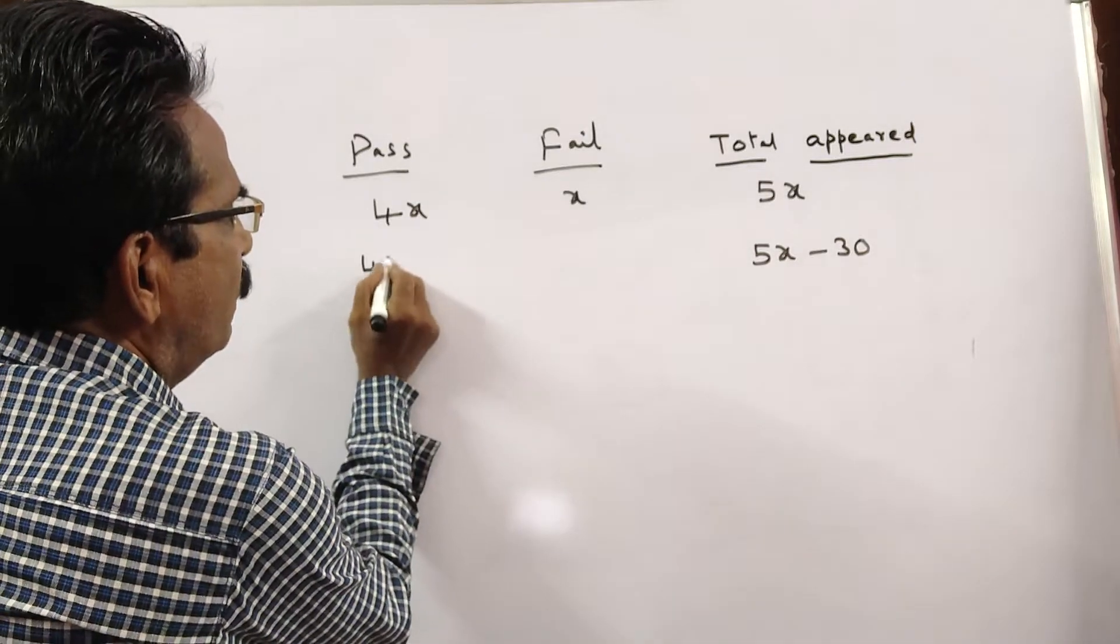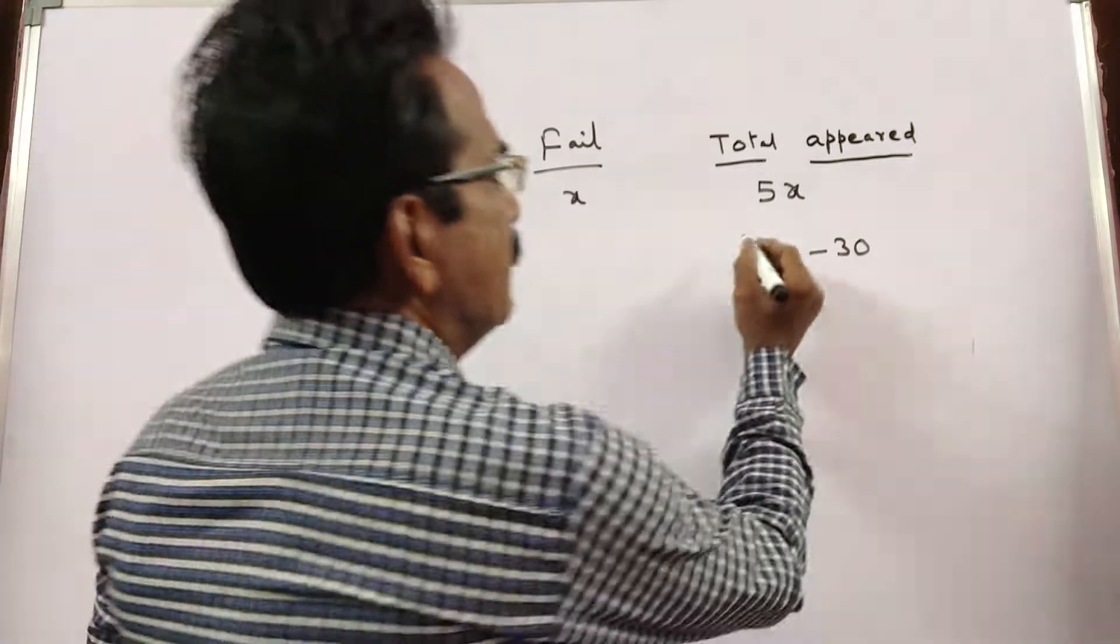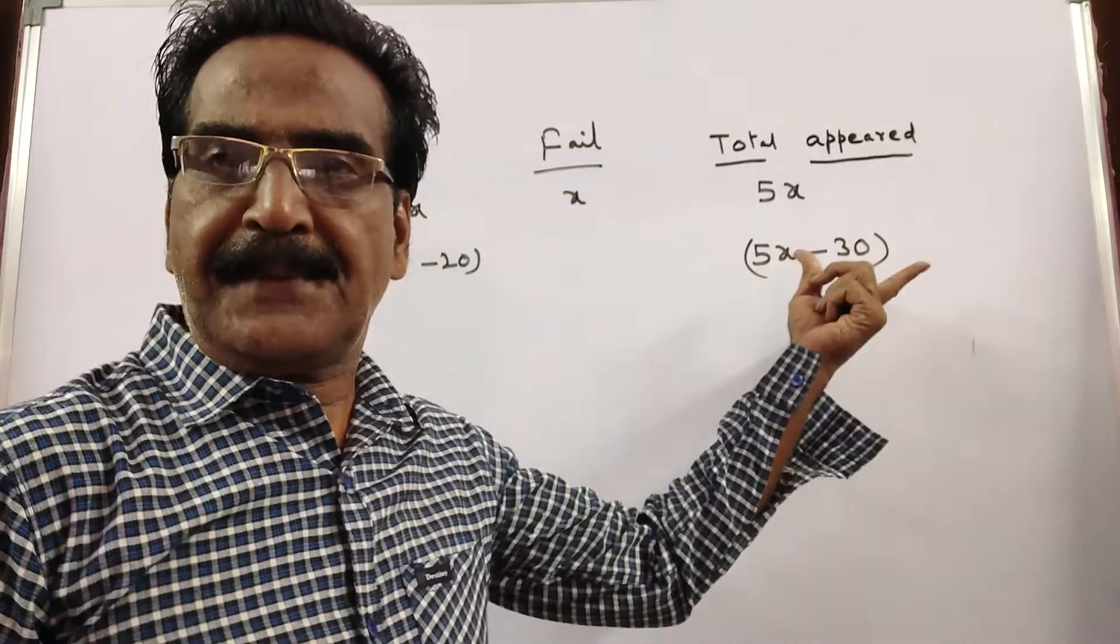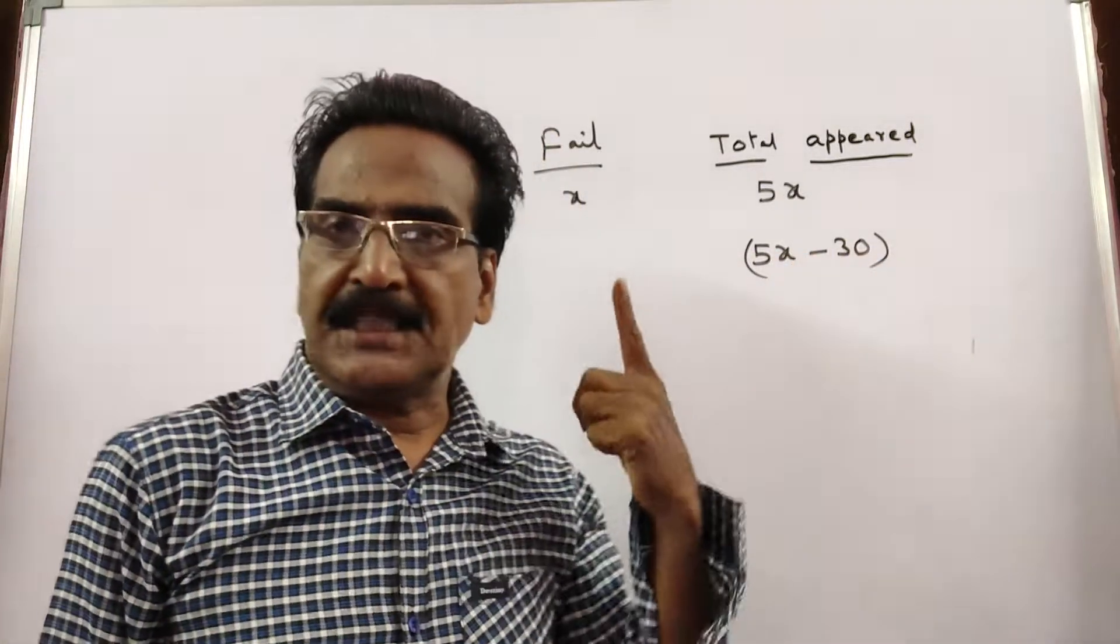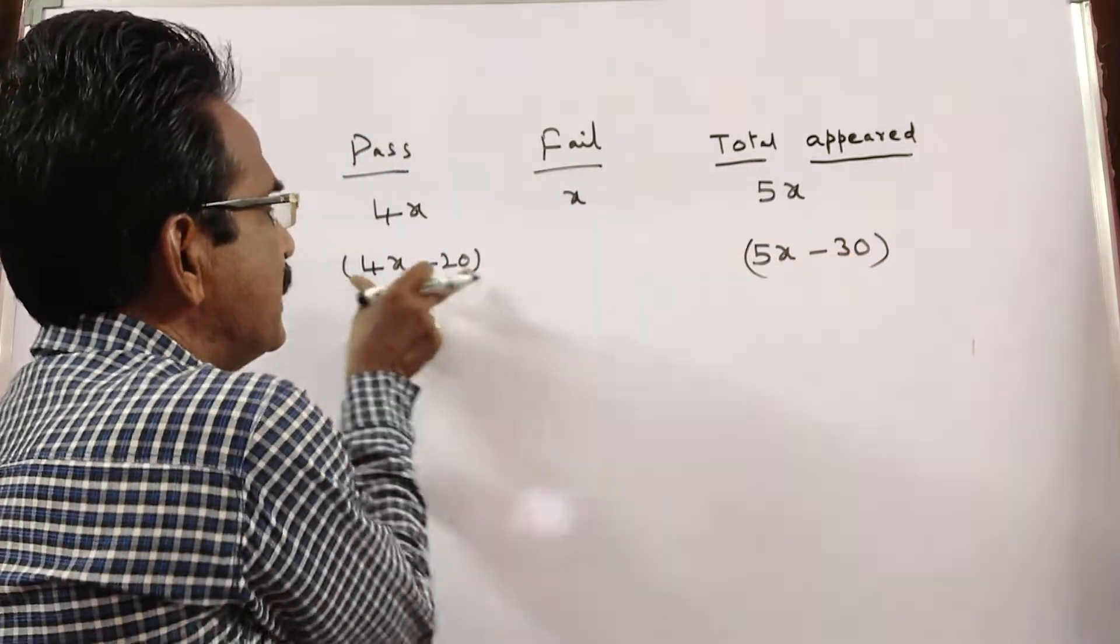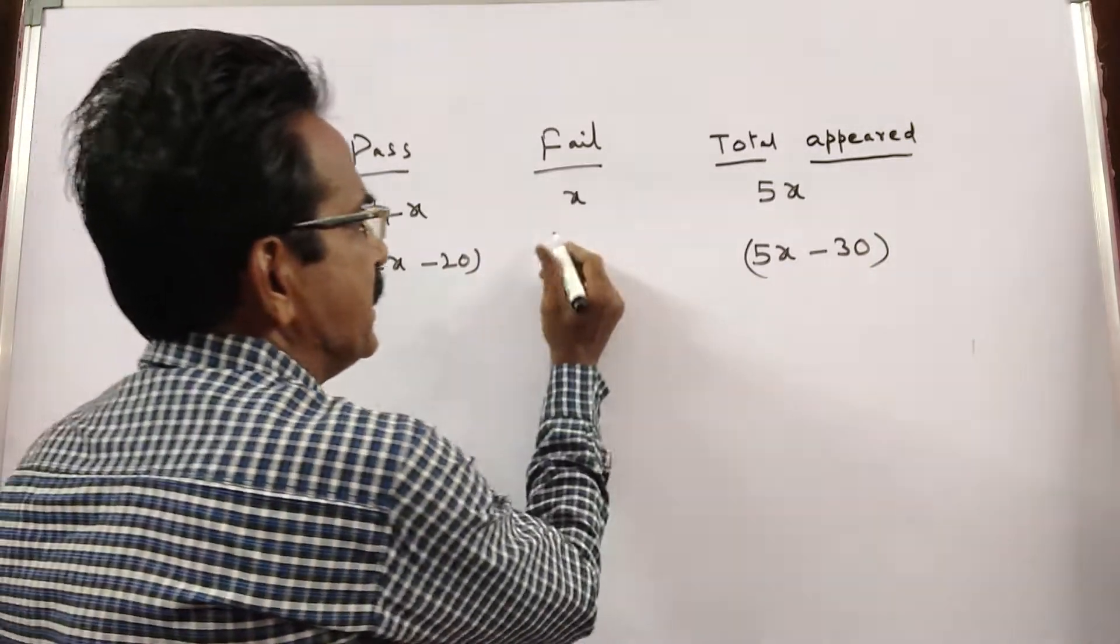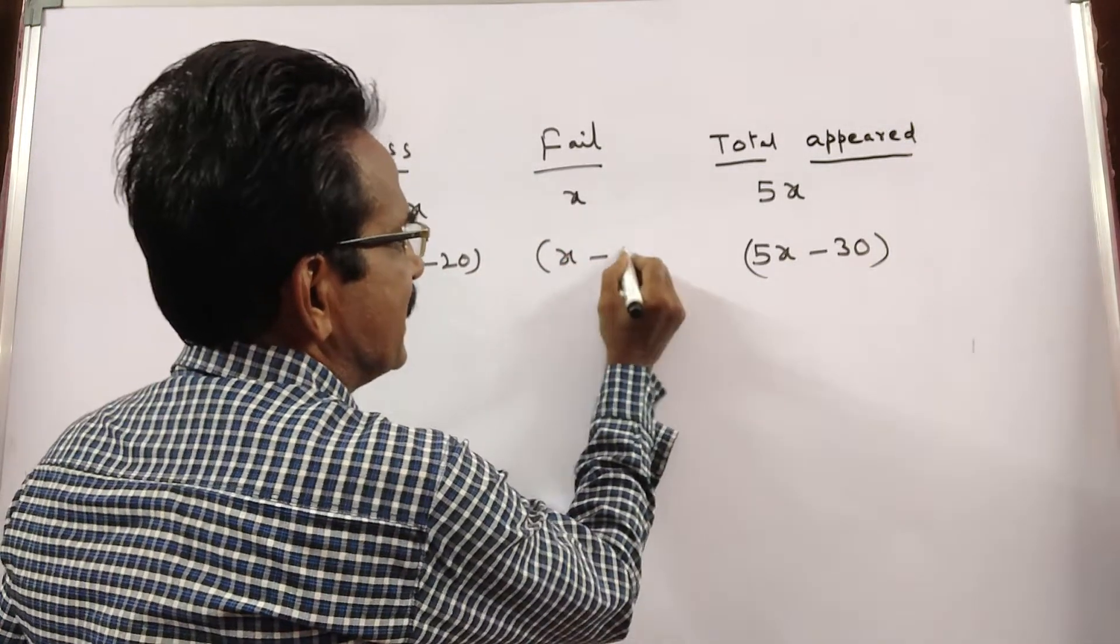So then passed becomes 4x minus 20. So this is 5x minus 30 total appeared, 4x minus 20 total passed. Then total failed becomes this minus this: 5x minus 30 minus 4x minus 20 equals x minus 10.